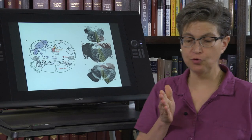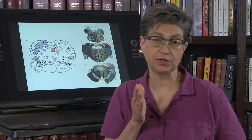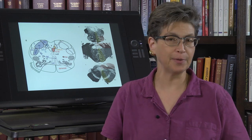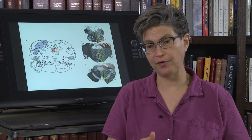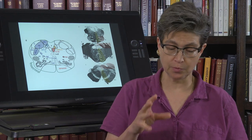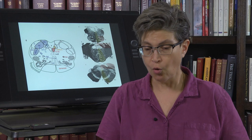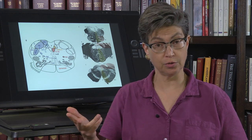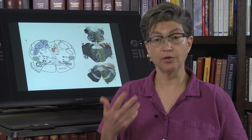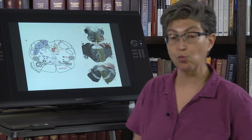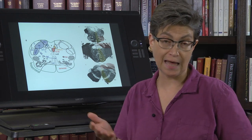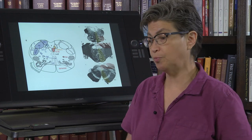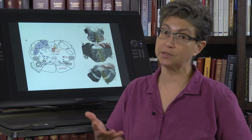We're going to talk about a few specific stroke syndromes. Stroke can happen anywhere, but some strokes are more common than others. In the brainstem, there are two that are common. The most common one is Wallenberg syndrome, which is also called lateral medullary syndrome. This is important because it's common, and it's also important because it's on the boards.